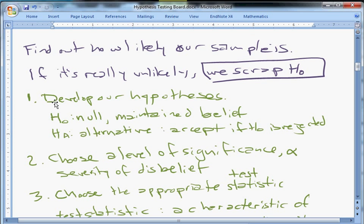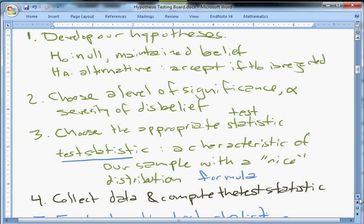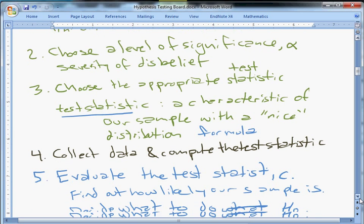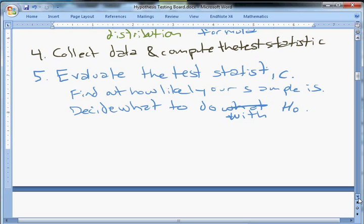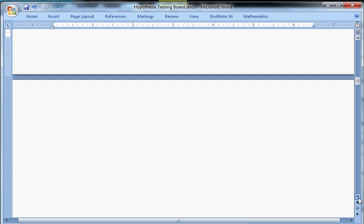The first one is we develop our hypotheses, that includes our null and alternative. Then we choose a level of significance, which is the level of disbelief or the level of unlikelihood sufficient to warrant disbelief. Then we choose our appropriate test statistic. For now that will be easy, that will get more complicated as we look at more tests. Then we collect our data, we compute the test statistic. Then last but not least we evaluate the test statistic. All these steps are pretty easy. Break it down into these five steps, do them over and over again and we'll be fine.